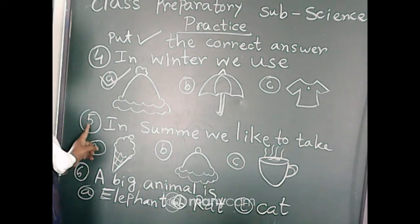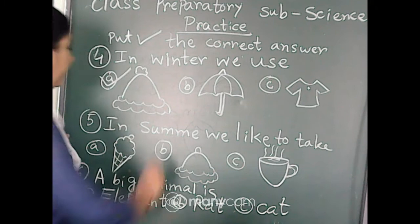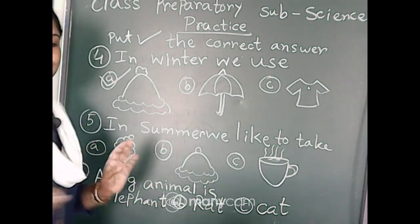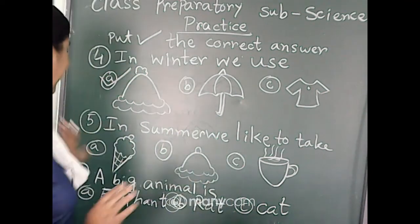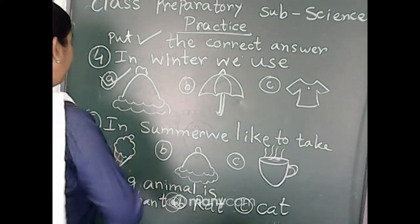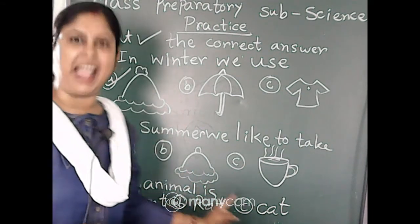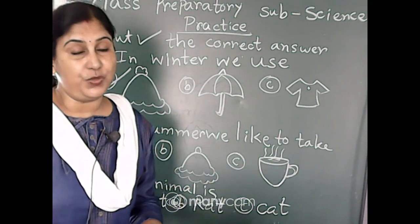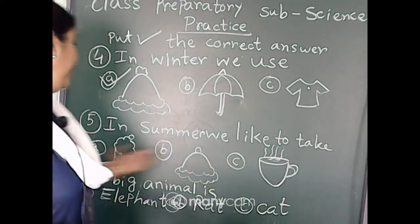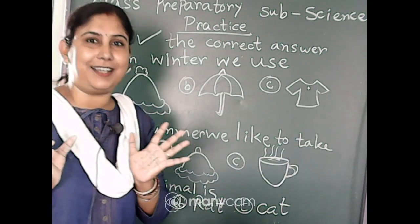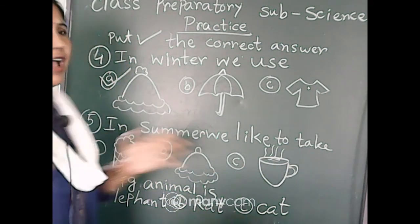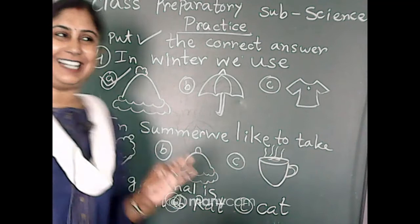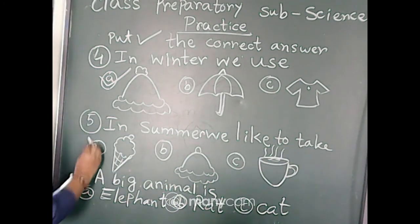Number five: In summer we like to take... Option A is ice cream, option B is woolen cap, and option C is hot coffee. Which one will be the correct answer? Ice cream, we like to take in summer because outside is so hot and we like to drink cold things just like ice cream. So we can put right here.